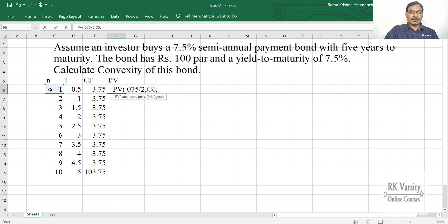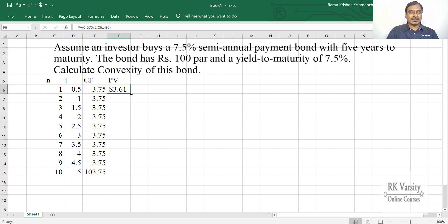So this is N, then payment is not there. A future value is the coupon amount or the cash flow that you receive. So minus 3.75, select this cell, close the bracket, press enter key. 3.61 or Rs.3.61 is the present value of this coupon.